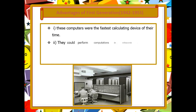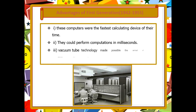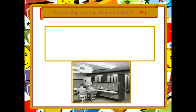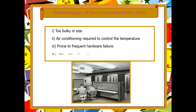Let us explain the advantages of first generation computers. First, these computers were the fastest calculating devices of their time. They could perform computations in milliseconds. The vacuum tube technology made possible the arrival of electronic digital computers.